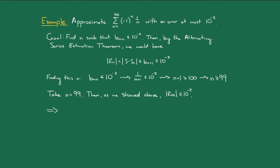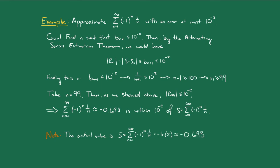And so, we have that the 99th partial sum, which is about negative 0.698, is within 10 to the minus 2 of the actual sum. And so, we're done. Just a quick note, the actual sum of the series is minus natural log of 2, which is equal to negative 0.693, and so we were pretty close.